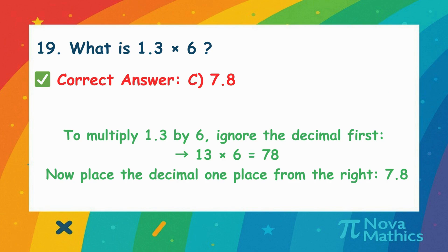Let's multiply 1.3 by 6. First, think of it without the decimal. 13 times 6 is 78. Now put the decimal back one place. That's 7.8.